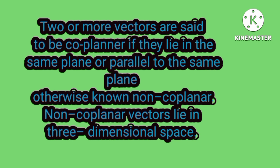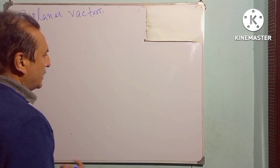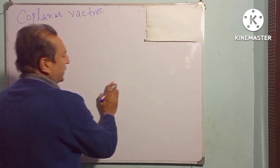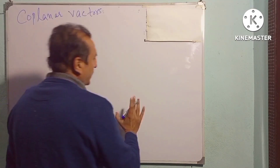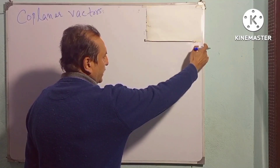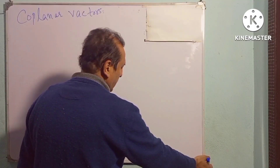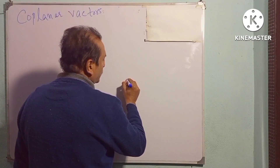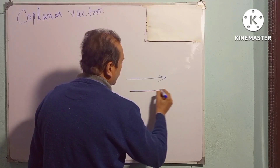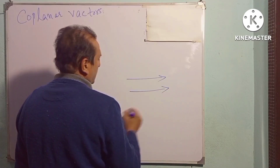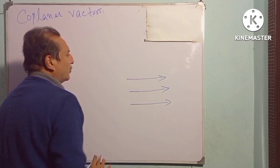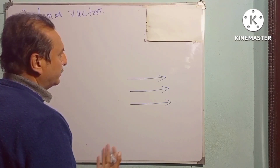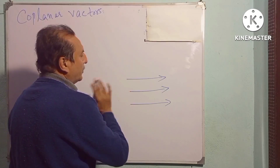Non-coplanar vectors lie in three-dimensional space. This board has a plane. A plane is a two-dimensional surface. This is the y-axis and this is the x-axis. If there are more than two vectors — three vectors — this plane is one plane, this board is one plane.